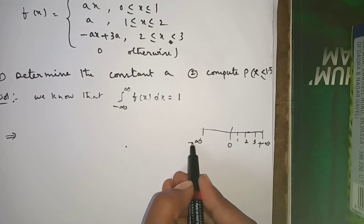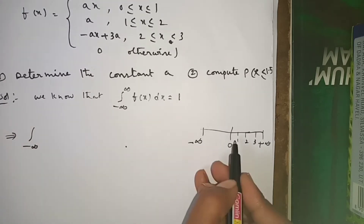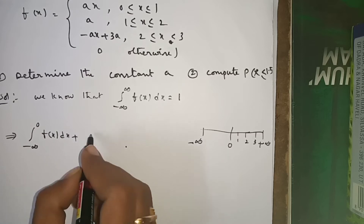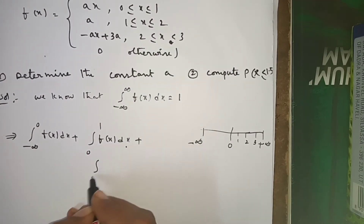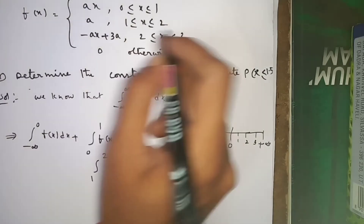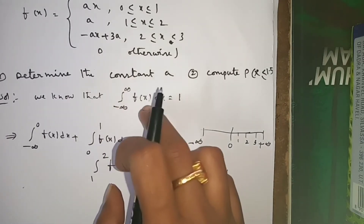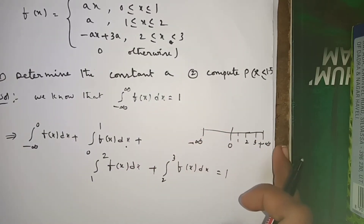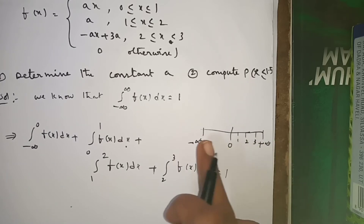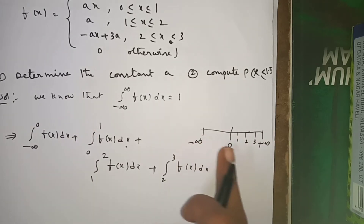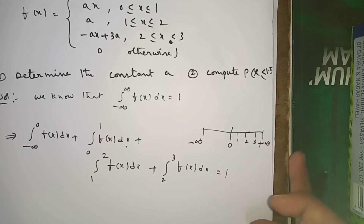We split the integral from minus infinity to plus infinity into parts: from minus infinity to 0, then 0 to 1, then 1 to 2, then 2 to 3, and finally 3 to plus infinity. The sum of all these integrals equals 1.